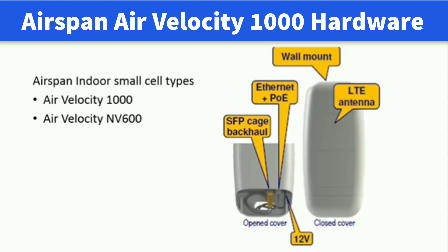This slide shows the front view of AirVelocity 1000 device in opened and closed cover. AirVelocity 1000 is a compact device which is wall mountable. The right hand side of the image shows a closed cover small cell. It has an inbuilt LTE antenna which is used for LTE signal radiation and reception.